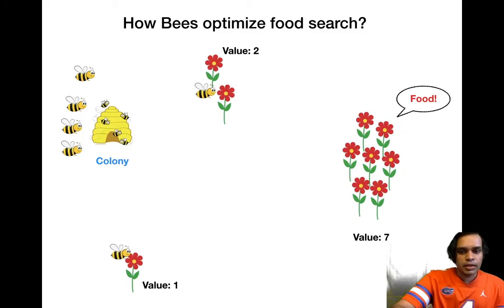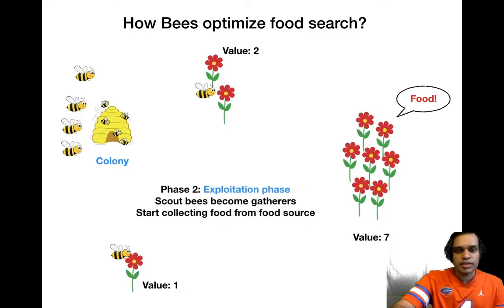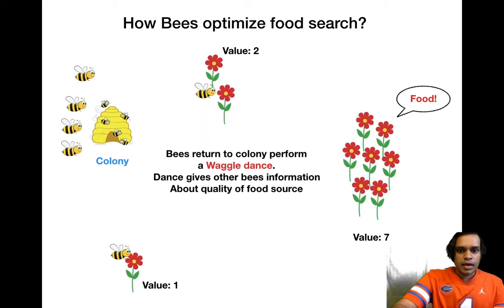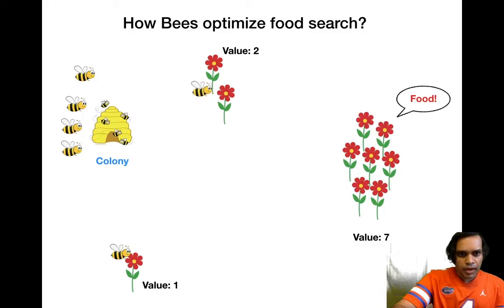Once they find their food sources, these bees transition to the next stage which is known as the exploitation stage. In this stage the bees start to harvest the food from the food sources. When they are done, they return back to the beehive, and upon return they do a dance which is known as a waggle dance. The bee at value two goes back and does a waggle dance, same goes for the other bee.